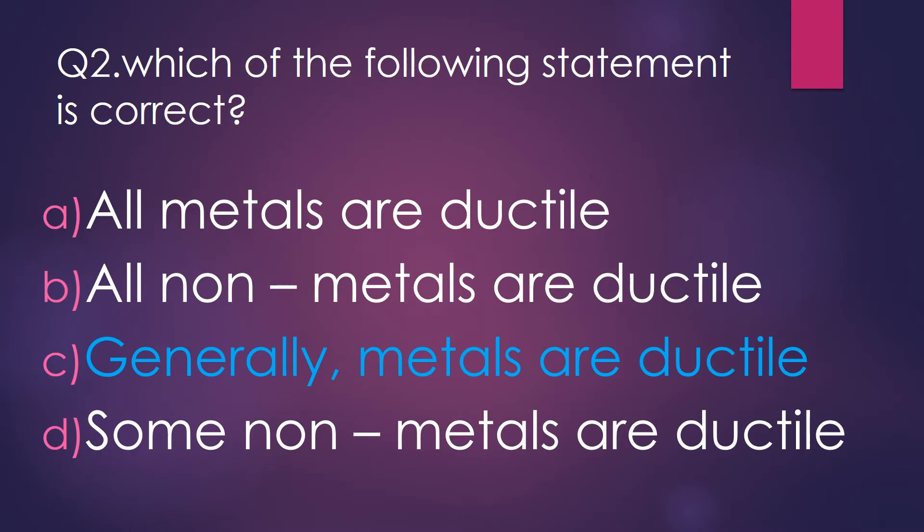Question number 2: Which of the following statements is correct? 'All metals are ductile' — this is wrong because mercury is an exceptional case; it is a metal in liquid state at room temperature. 'All non-metals are ductile' — wrong, as ductility is not a property of non-metals. 'Generally metals are ductile' — true, because metals can be drawn into wires. 'Some non-metals are ductile' — false, as it is not a property of non-metals.